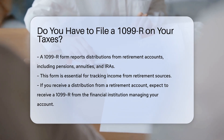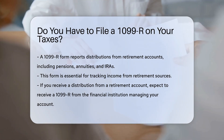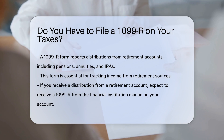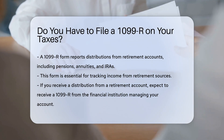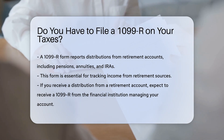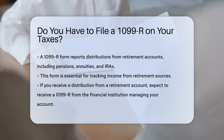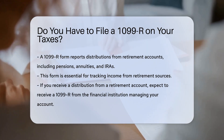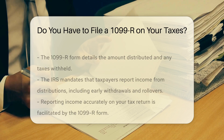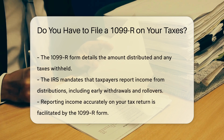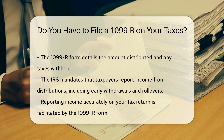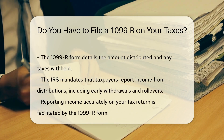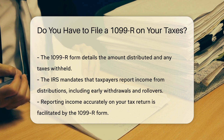If you received a distribution from a retirement account, you may receive a 1099-R. The form is issued by the financial institution managing your account. It provides details about the amount distributed and any taxes withheld.